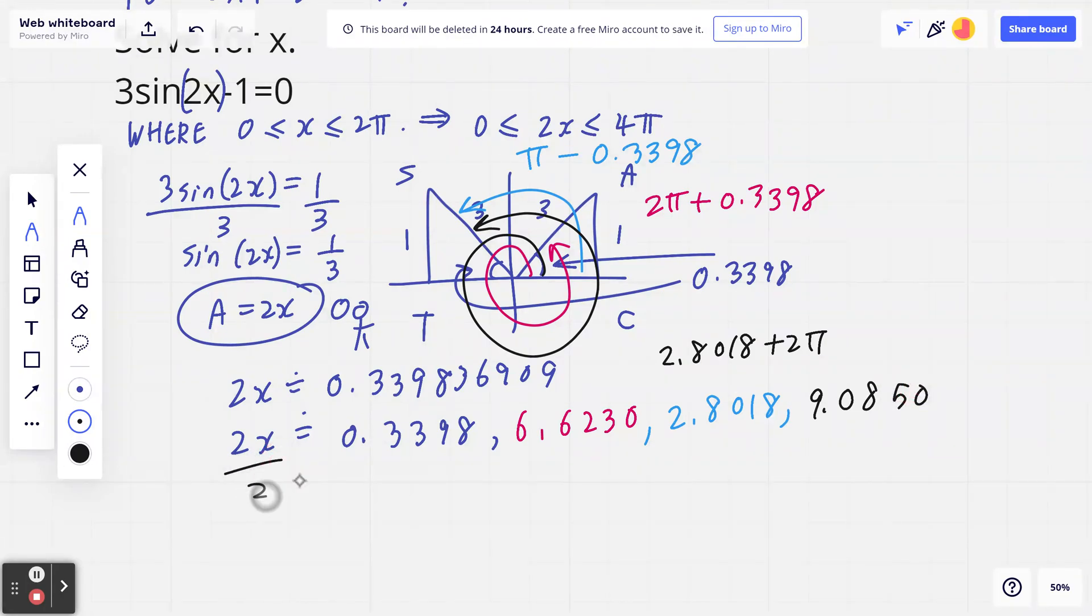Your goal is not to find 2x, your goal is to find x. And the opposite of multiplying by 2 is to divide by 2. So if I go back, I take the first number, 0.3398 divided by 2. Rounding that final answer to 2 decimals now, it's going to be 0.17.